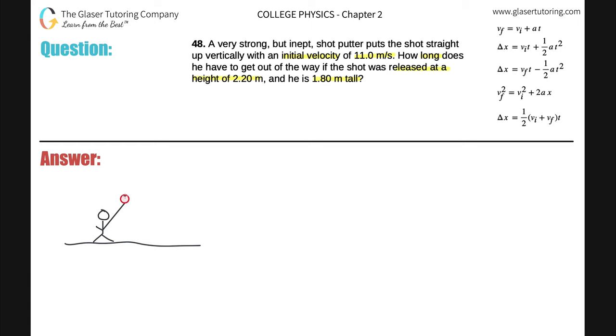Anyway, so this shot is going to be released with an initial velocity of 11.0 meters per second. And it tells us also the height at which it's released relative to the ground. This particular height here is going to be 2.20 meters, not meters per second, that would be a very interesting unit for height.